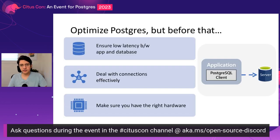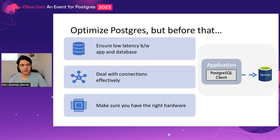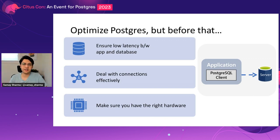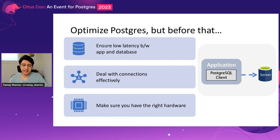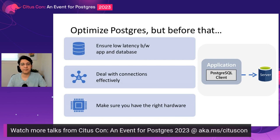One of the passions I developed as part of that journey is making it easier for people using Postgres to understand Postgres performance, tuning, and internals in a very simple way. Before we dive into Postgres optimizations, it's important to understand the context. Make sure that your application and the database server are set up so that the latency between them is low — this matters a lot for high write OLTP workloads.